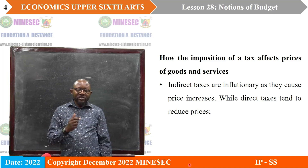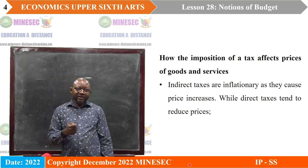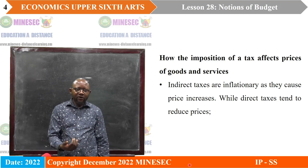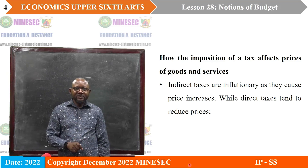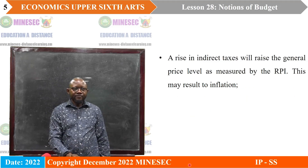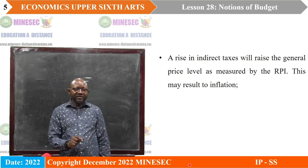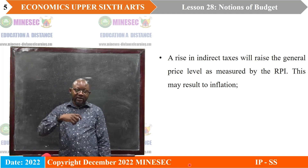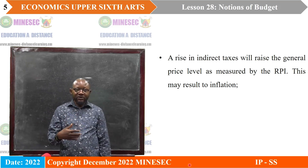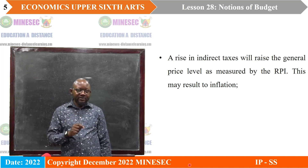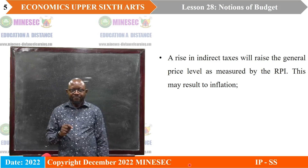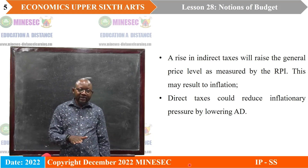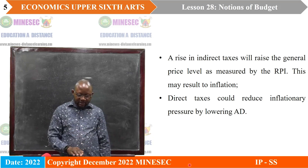On the other hand, direct taxes will tend to reduce prices. Because direct taxes, like an income tax, imply a reduction in purchasing power and a fall in aggregate demand. So when demand is falling, prices are compared to fall. A rise in indirect taxes will raise the general price level as measured by the retail price index — the index that shows the average change in prices of a basket of commodities over a given period of time. This may result in inflation. Then direct taxes will reduce inflationary pressure by lowering aggregate demand, causing prices to fall.